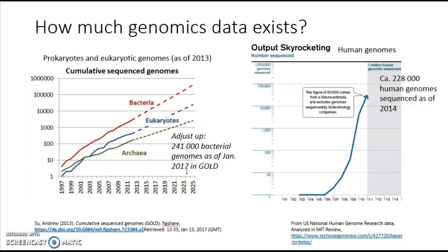Because in 2017, if you look today in the GOLD resource, which is part of the Joint Genome Institute organized by the Department of Energy in the United States, we've already got 241,000 bacterial genomes. That number falls a bit higher than what this graph actually shows. So we're seeing a tremendous number of bacterial, archaeal, and eukaryotic, as well as viral genomes being published.